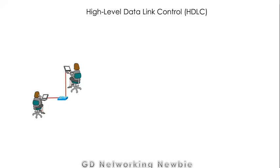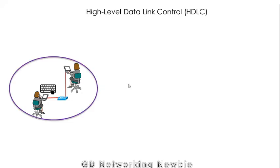Today we are going to discuss HDLC, or High-Level Data Link Control. To understand HDLC, suppose there are two users on the same network and one user wants to send information to the other. If they are on a local area network established using Ethernet protocol, both users have an Ethernet link between them, and by following the Ethernet protocol they can exchange information with each other.